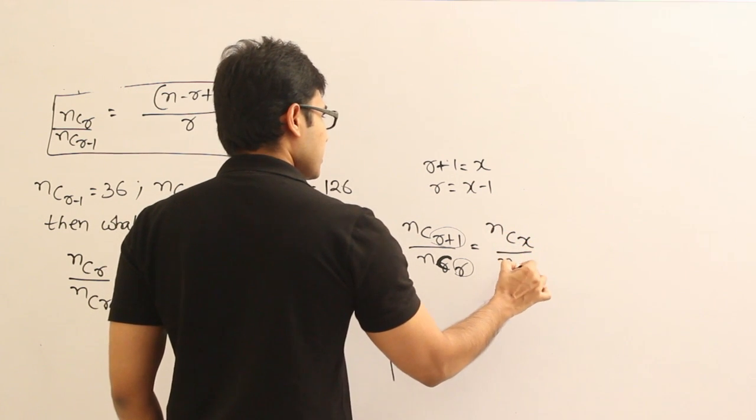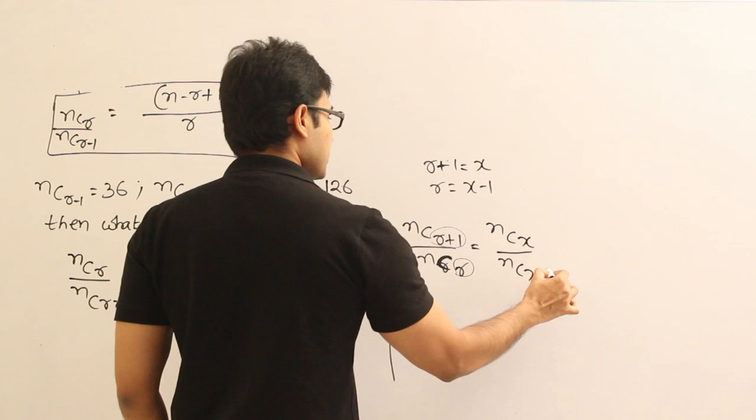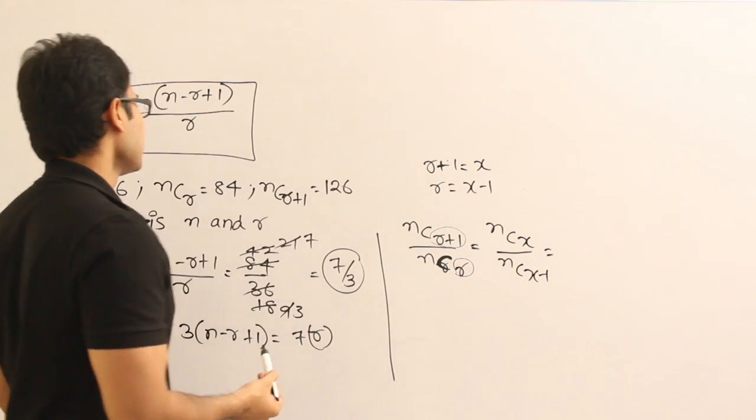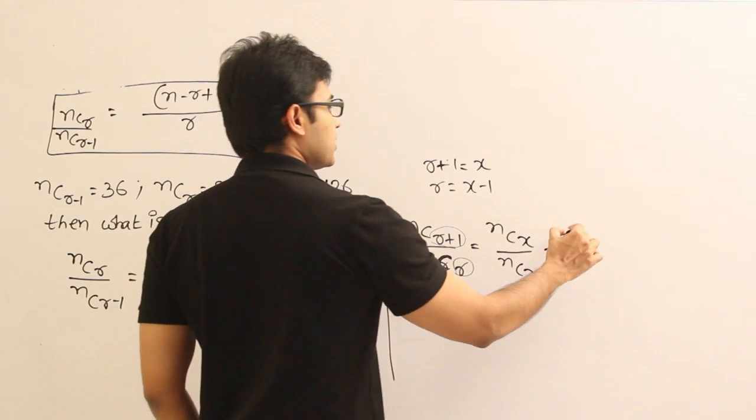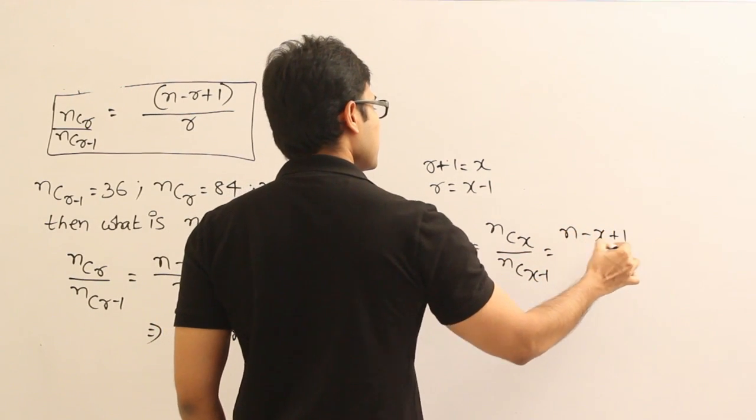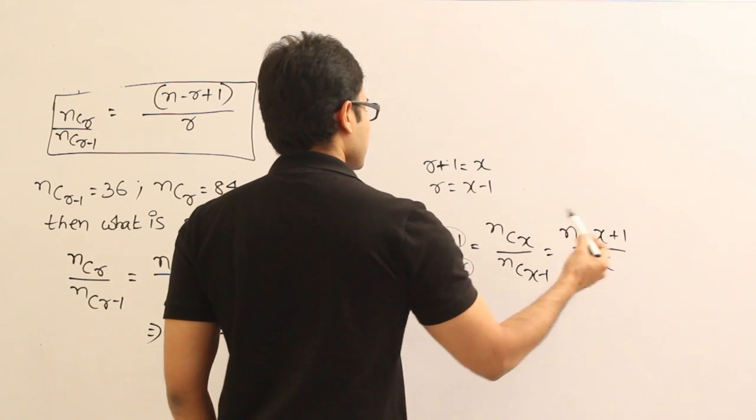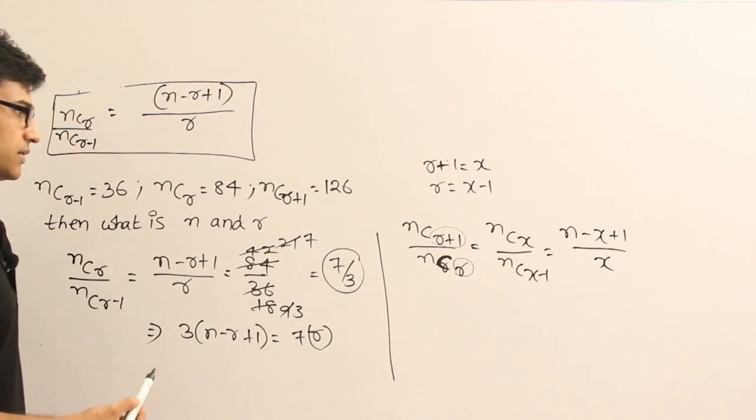nCr divided by nC_(r-1). Then what do we get here? nCr divided by nC_(r-1) is equal to like this, which is nothing but (n-X+1) divided by X. Just see this. In place of r I am just substituting X.